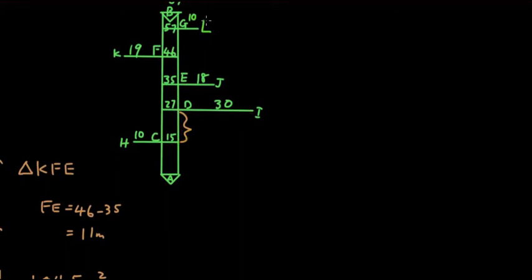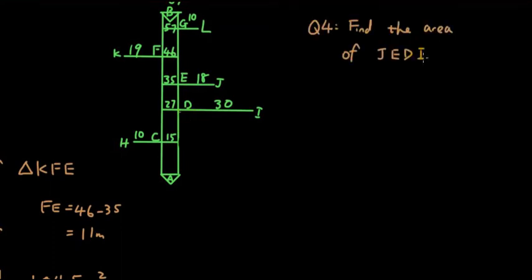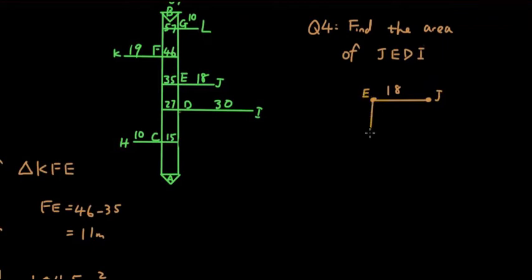Next question: find the area of JEDI — what a coincidence! So J-E-D-I. Let's draw that out separately. From J to E is 18. From E to D is at right angles and equals 35 minus 27, which is 8 meters.